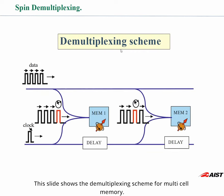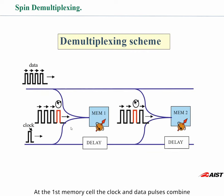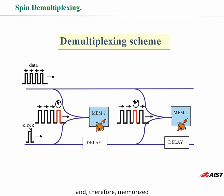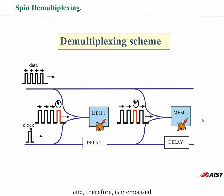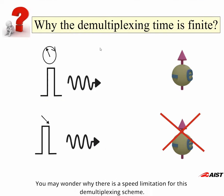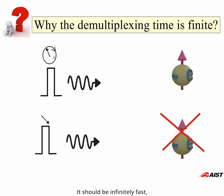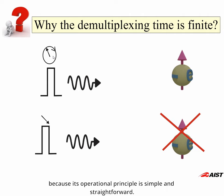This slide shows a demultiplexing scheme for multi-cell memory. At the first memory cell, the clock and data pulse are combined so that the first data pulse becomes circularly polarized and therefore memorized. There is a delay for the clock pulse so that at the second memory cell, the second data pulse becomes circularly polarized and therefore memorized. You may wonder why there is a speed limitation for this demultiplexing scheme — it should be infinitely fast, because its operation principle is simple and straightforward.